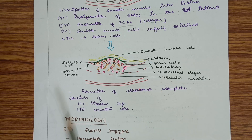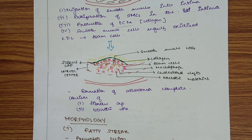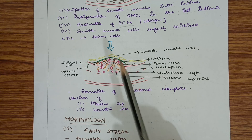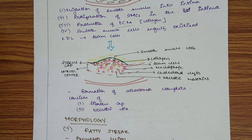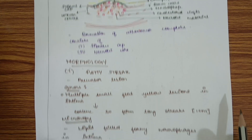The microscopy of the atherosclerotic plaque shows it consists of a fibrotic cap and a necrotic center. The fibrotic cap is formed by extracellular matrix, and the necrotic center is formed by foam cells, macrophages, cholesterol clefts, and necrotic material.